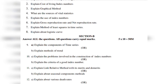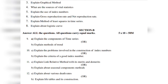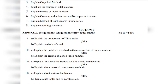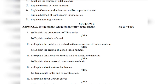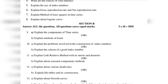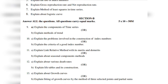Twelfth a: explain about various death threats. Twelfth b: explain life table and its constructions. Thirteenth b: explain about growth curves. And thirteenth b: explain fitting of growth curves by the method of three selected points and partial sums.